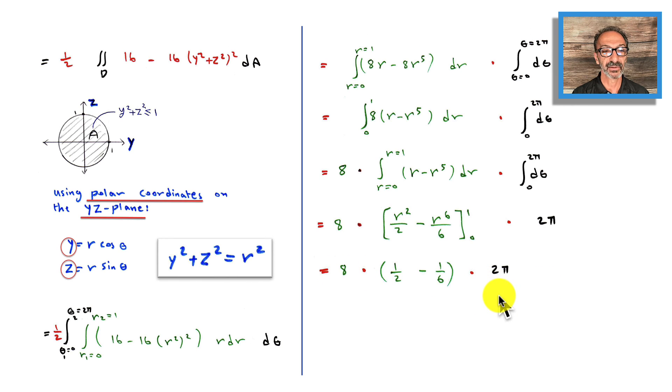We have the 8 and the 2π. With a common denominator of 6, 1/2 is 3/6, so 3/6 minus 1/6 equals 2/6, which is 1/3. Doing the math: 2 times 1 times 8 equals 16 on top with π, and 1 times 3 times 1 equals 3 on bottom. That's 16π over 3.